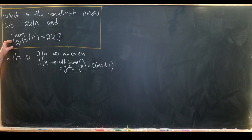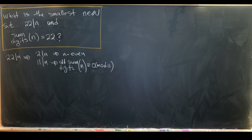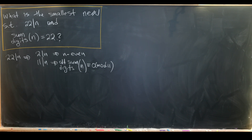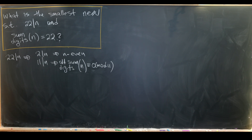So we need the sum of the digits of n to equal 22 and the alternating sum to be congruent to 0 mod 11. What's the smallest number of digits we can use to achieve a digit sum of 22? We can't use three digits because the largest three-digit number is 999, whose digit sum is 27 — but that's a three-digit sum issue — so it must be a four-digit number.